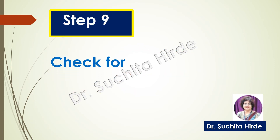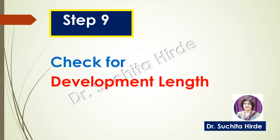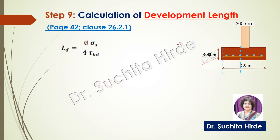The last step is the check for development length. According to IS 456 page 42, we calculate the development length using the given formula and check whether the length available in the footing beyond the face of the column is more than this development length, excluding the end cover of 75 millimeter. First calculate the development length using the formula, then calculate what length is available.